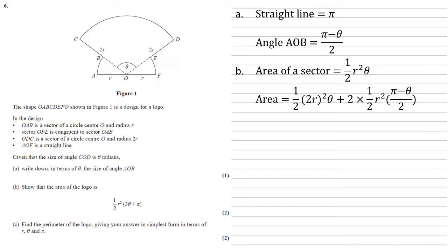So the area of our whole shape is going to be the larger sector. The larger sector has got a radius of 2R and an angle of theta. So half times 2R all squared times theta. Our smaller sectors have got radius of R and an angle of π minus theta over two, which we discovered earlier. And we've got two of them, so we've got to remember to do two lots of half R squared times π minus theta over two.